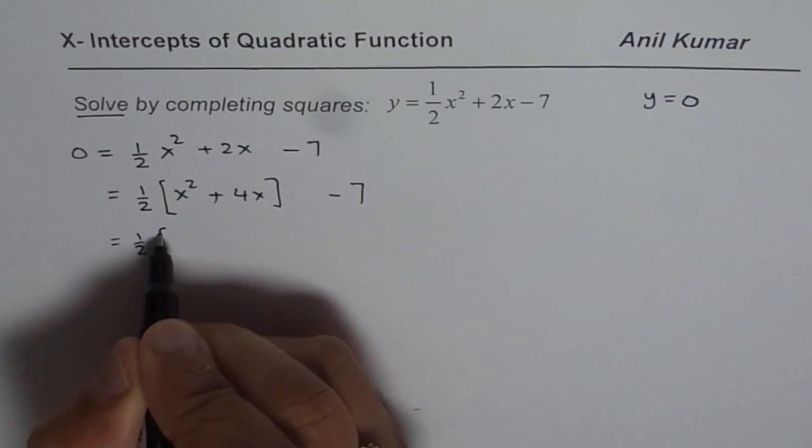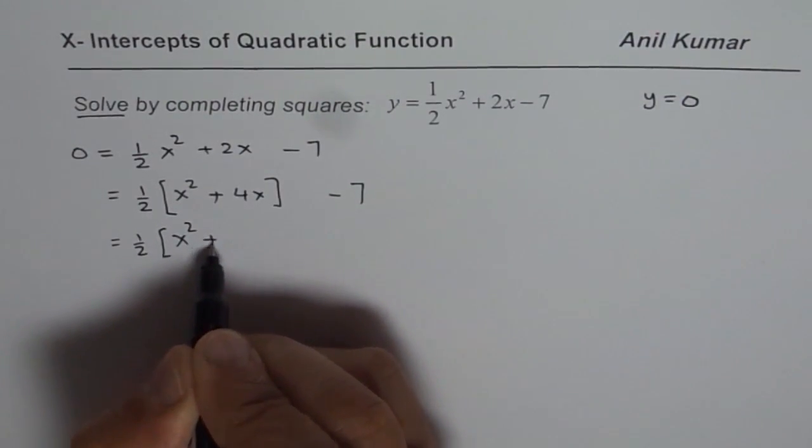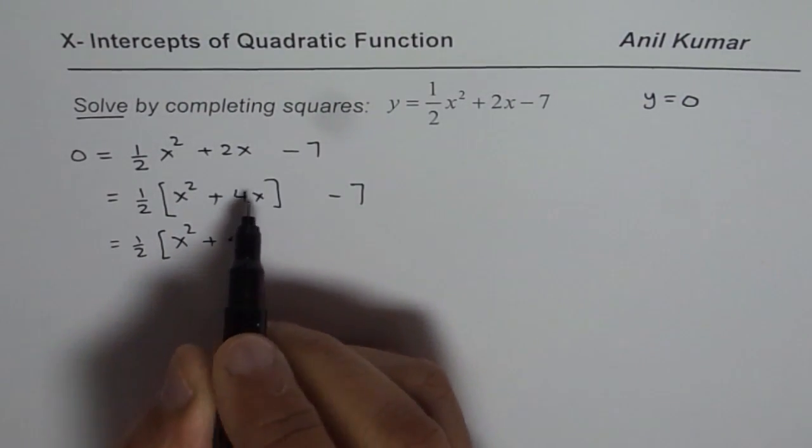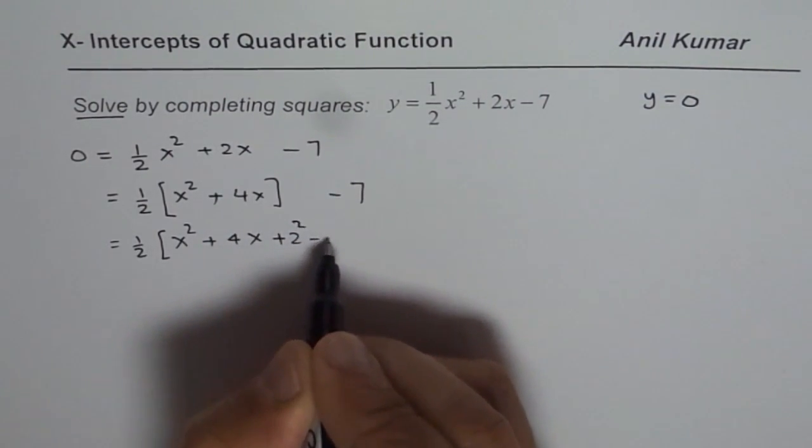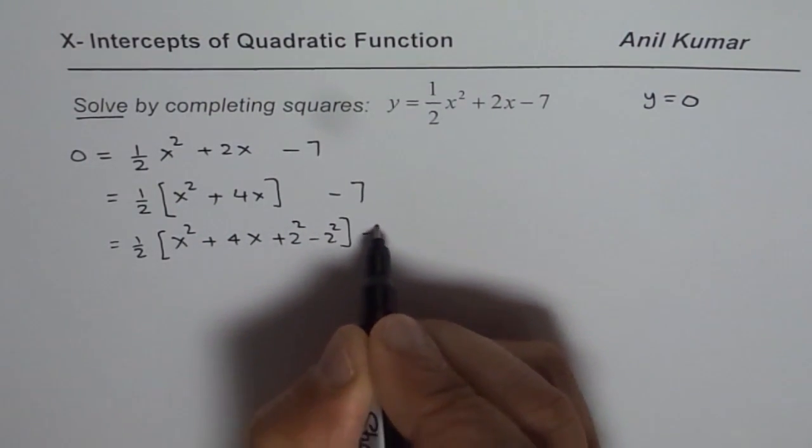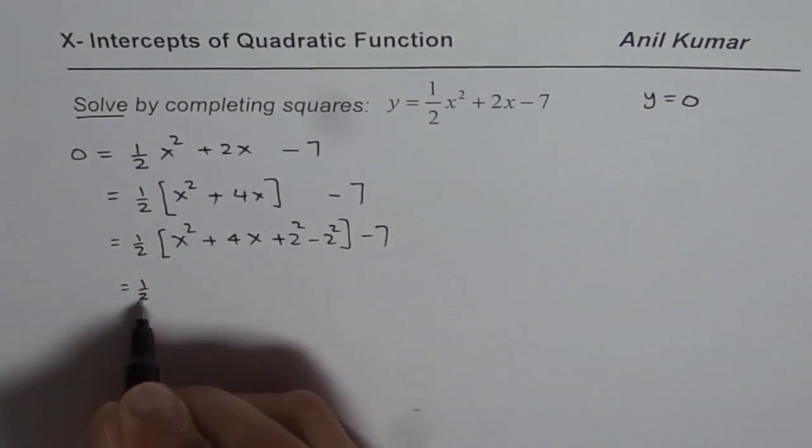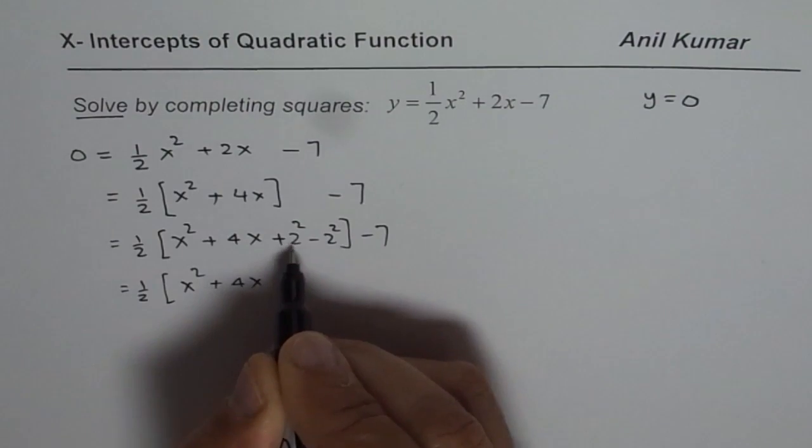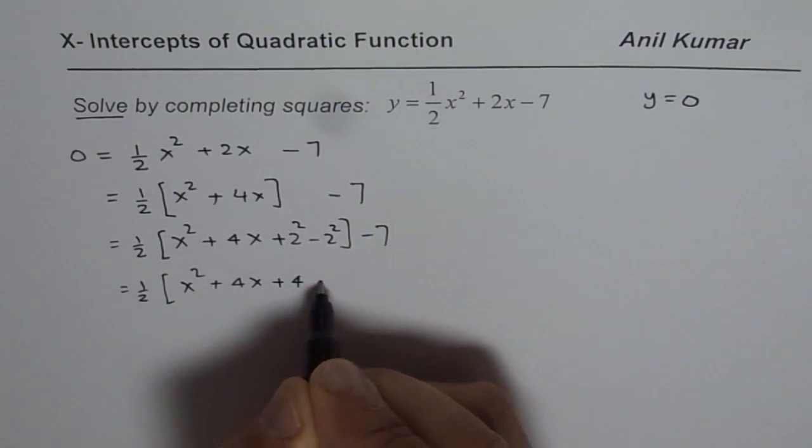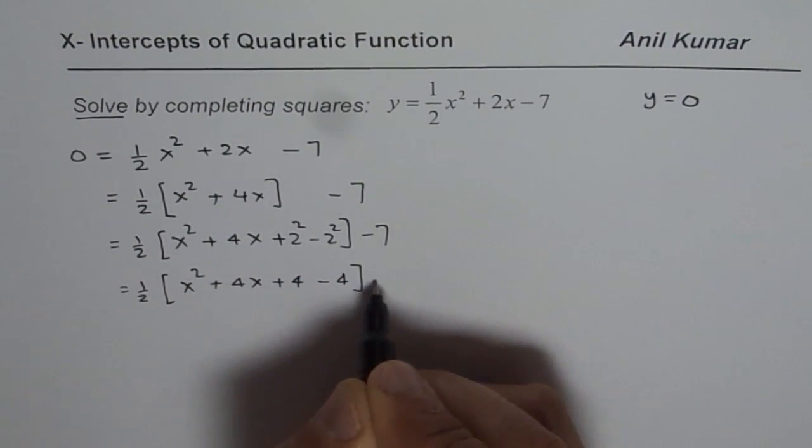Now to complete the squares, we have to add and subtract square of half of this number, which is 2 in this case. So we will add and subtract 2 squared. So we get half of x squared plus 4x plus 4 minus 4 minus 7.